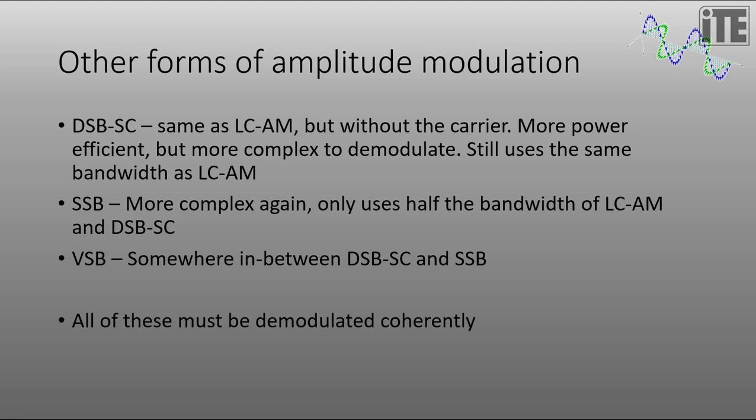Hence the name double sideband. The next type of amplitude modulation single sideband is more complex again, but only uses half the bandwidth. So the bandwidth for single sideband is just W. Vestigial sideband is somewhere in between DSB and SSB. So it uses somewhere between W and 2W of the bandwidth. And it's kind of a compromise type situation. And in fact all of those particular forms of modulation must be demodulated coherently.